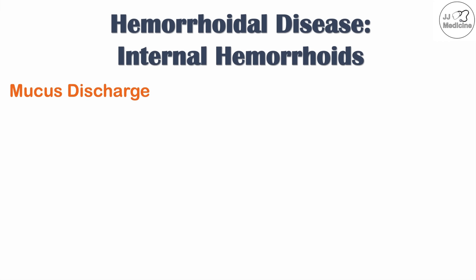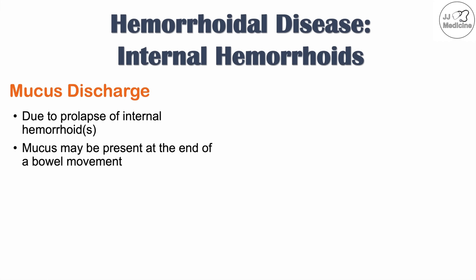Other signs and symptoms of internal hemorrhoids include mucus discharge, which is also due to prolapse of internal hemorrhoids. If the internal hemorrhoid becomes so enlarged and prolapses, it can interfere with normal fecal continence, causing mucus discharge. The mucus may be present at the end of a bowel movement and can be found in the toilet or on toilet paper.